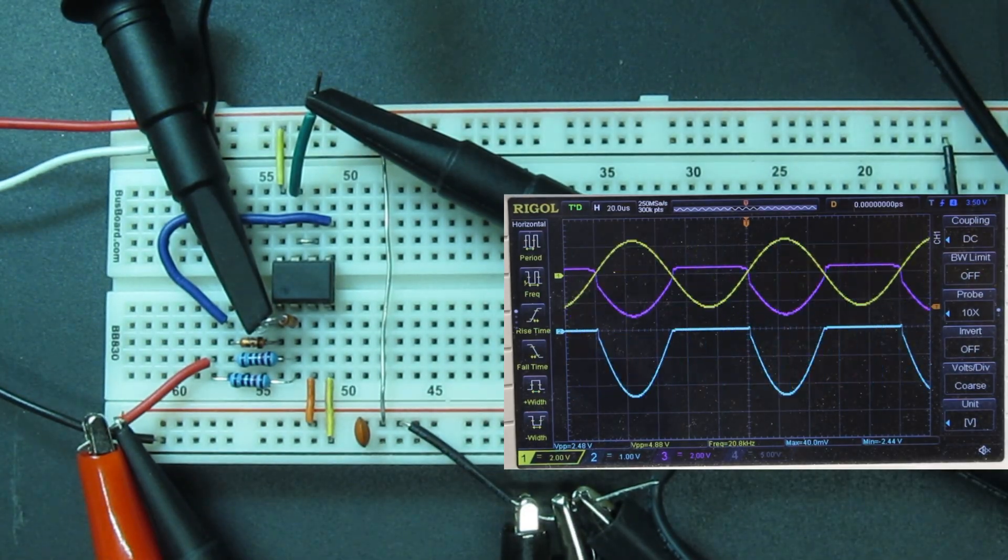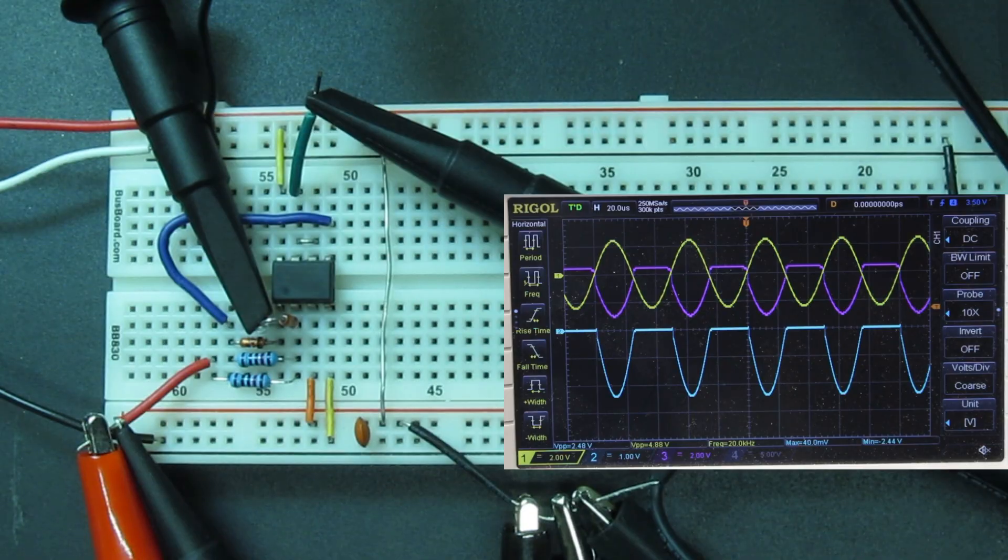Even when I bump the frequency to 20kHz, the glitches are just about gone. There's a tiny jump in the output where the input makes its positive going zero crossing, but it's almost undetectable.